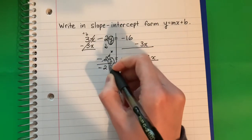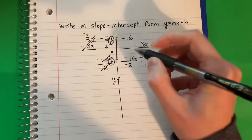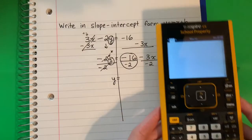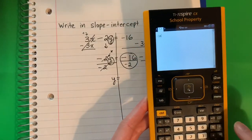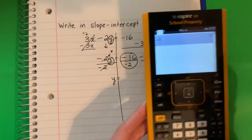Negative 2 divided by negative 2 is 1. Copy down y equals. You're going to put in the calculator negative 16 divided by negative 2. I'm going to get positive 8.